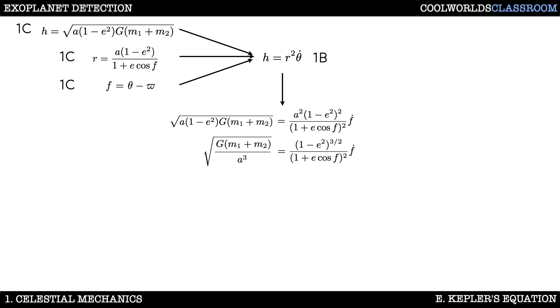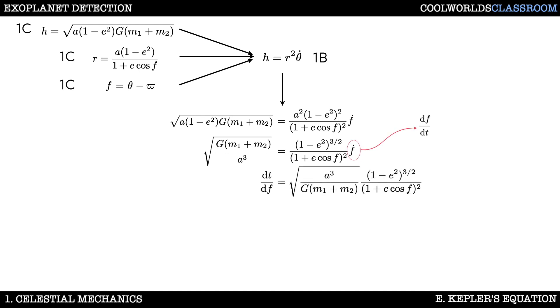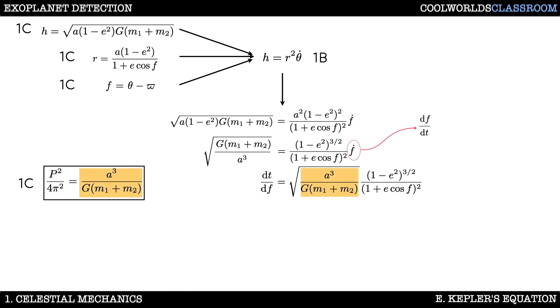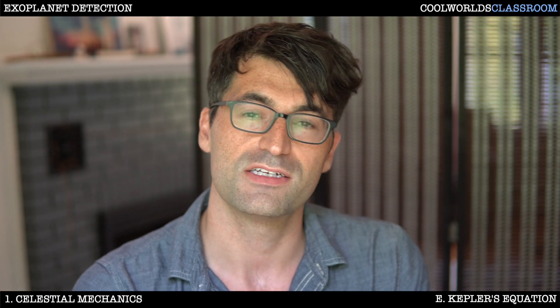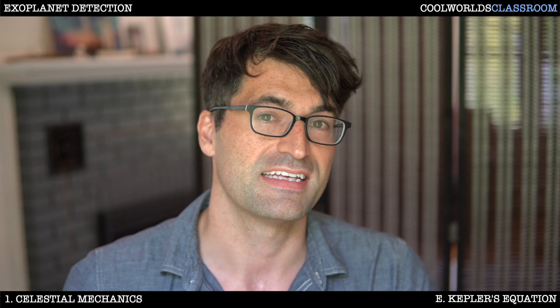Now let's move the a and the (1 − e²) terms around a little bit. Since f-dot is df/dt, rearranging gives us dt/df. We can clean this up further using Kepler's third law to replace the orange term. Unfortunately we can't take this analytic equation for df/dt and trivially solve it to get f as a function of time, but we will show a procedure for doing that later in the video.